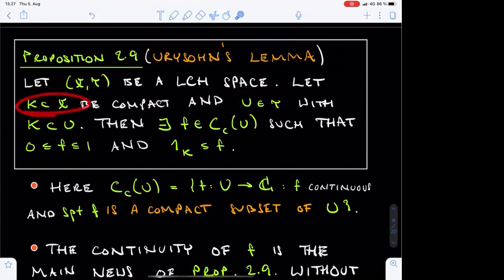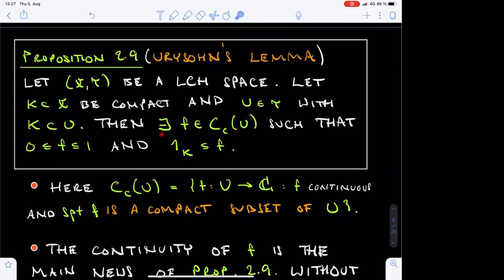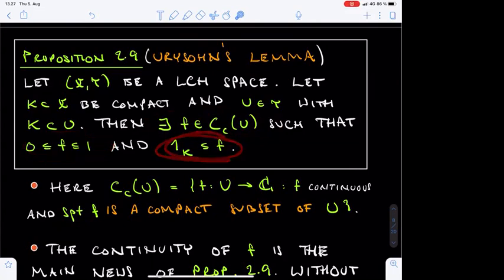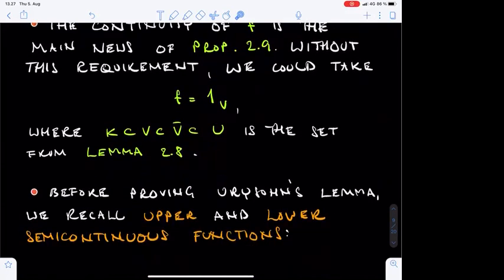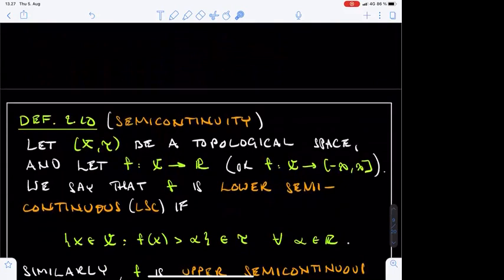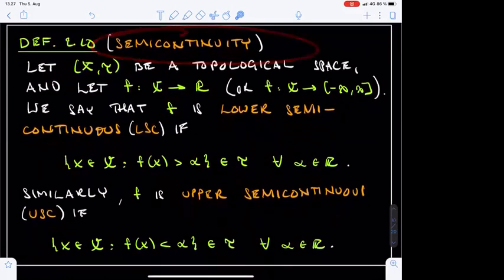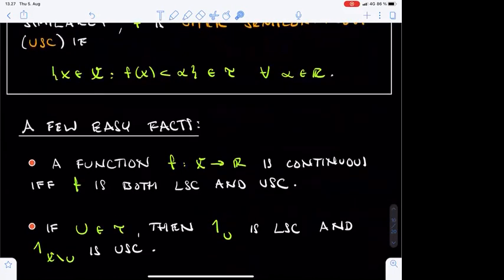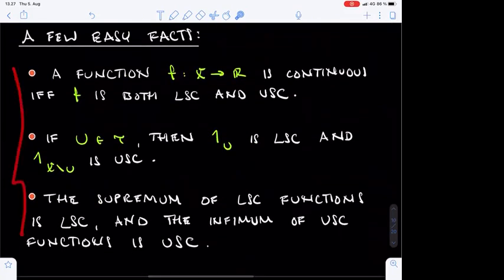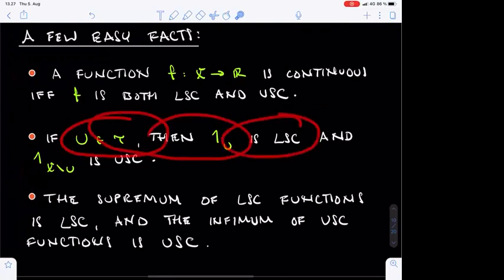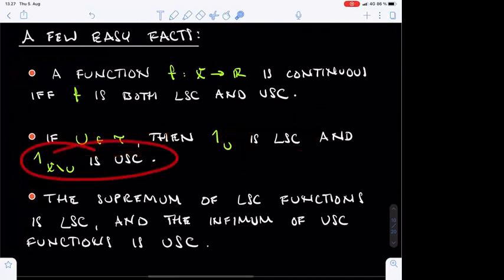We are given a compact set K and an open set U such that U contains K. The task is to construct a continuous function F whose support is compact and contained in U, which takes values between 0 and 1 and equals 1 on the set K. The construction of F will involve upper and lower semi-continuous functions, briefly introduced at the end of the previous lecture. Notably, characteristic functions of open sets are lower semi-continuous and characteristic functions of closed sets are upper semi-continuous.